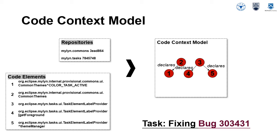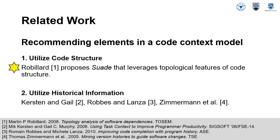In the example code context model, all the structural relationships tend to be declaration. Note that the relations could be of other types like inherit, implement, and call.